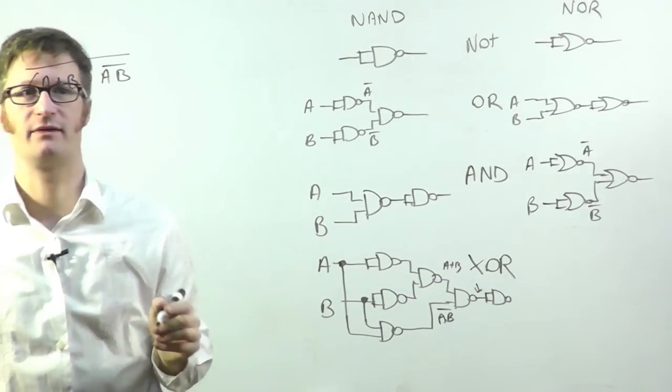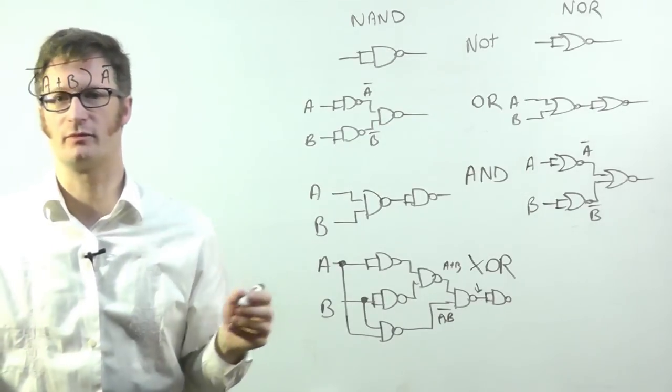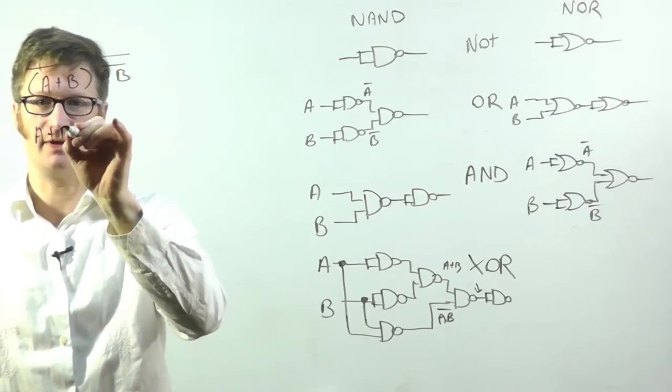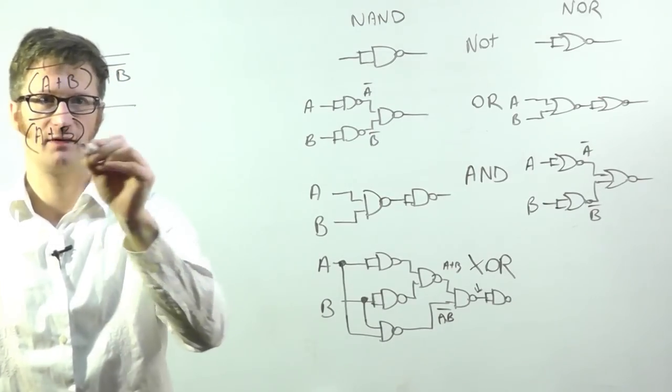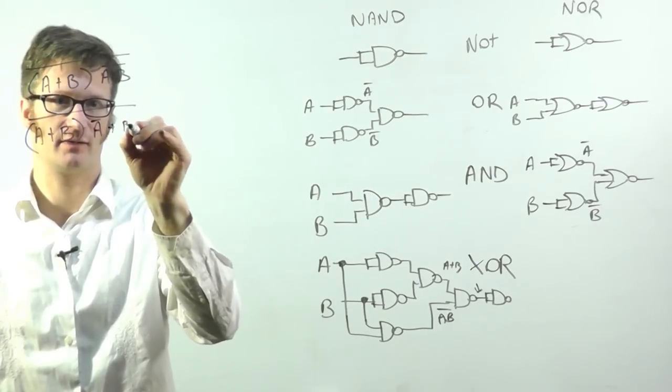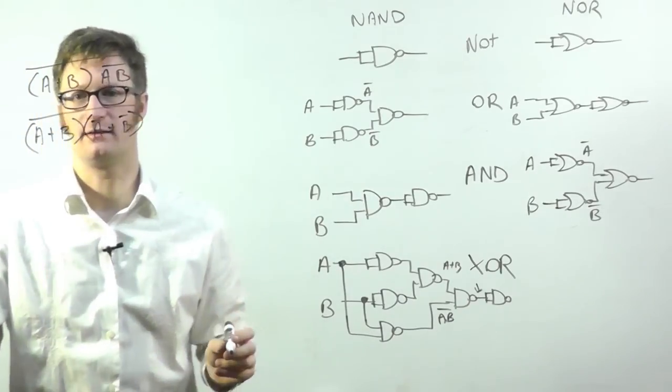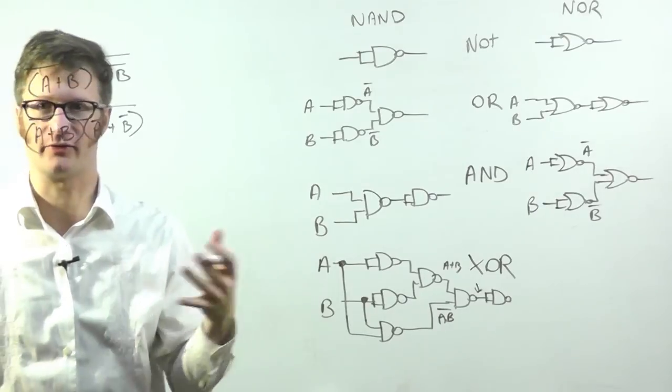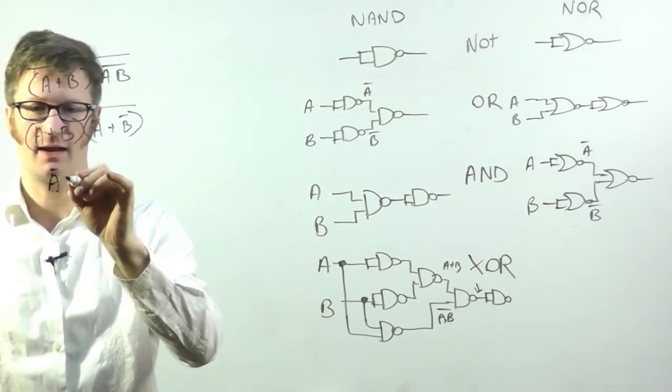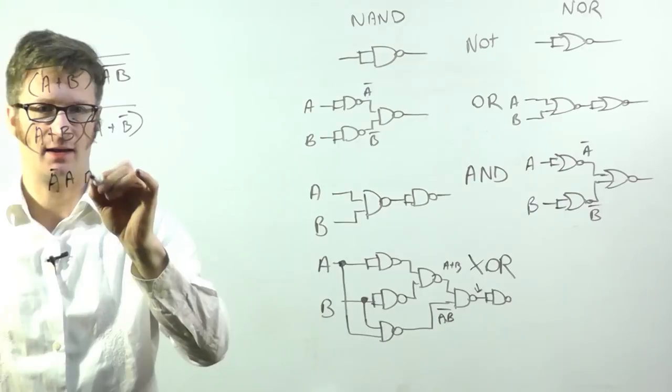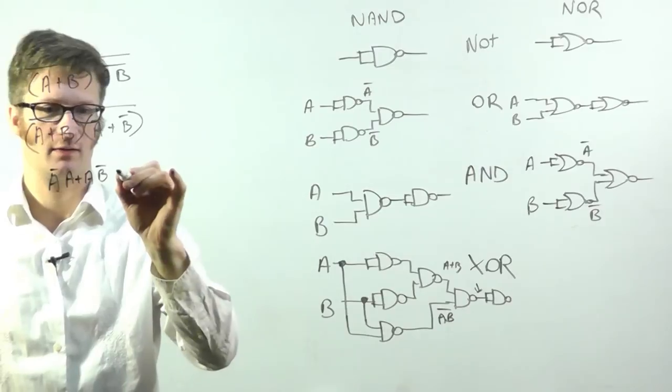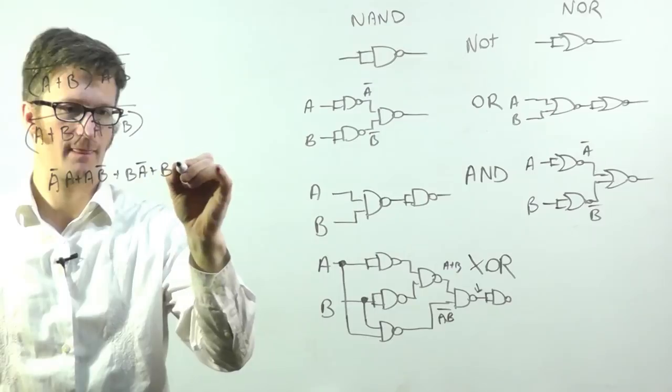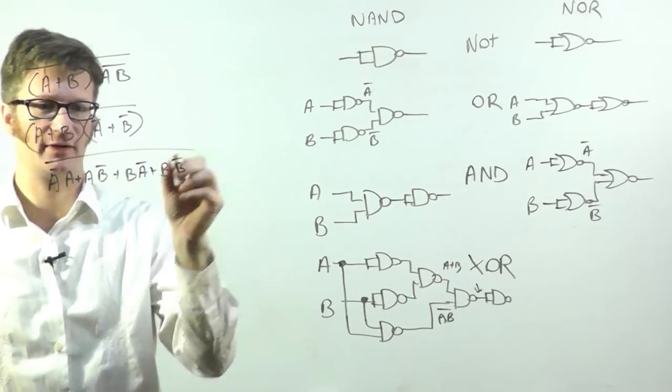So what I want to do is I want to apply De Morgan's theorem twice in this case. So first I'm going to use it on this term. So we get A OR B, and I'm just going to do this without going through the steps. And then I'm going to distribute or multiply through. It's not really multiplication. But so we got A A bar, A B bar, or B A bar, and B B bar. And the whole thing is inverted.